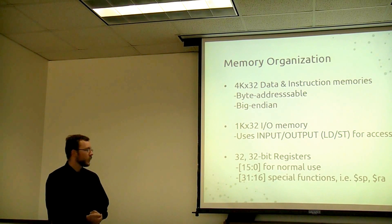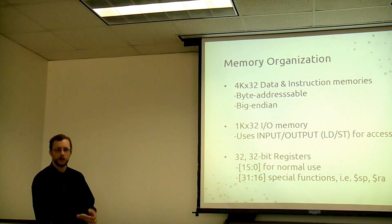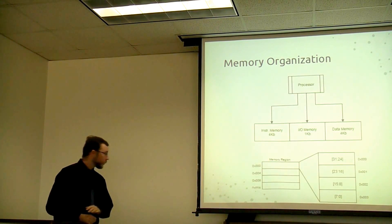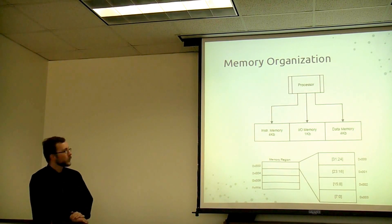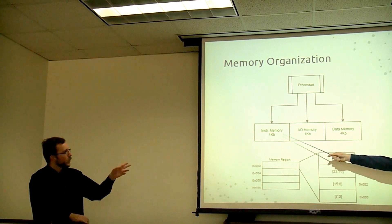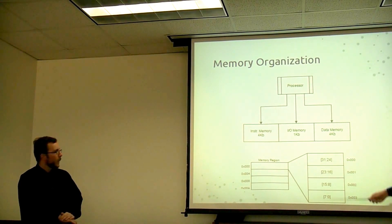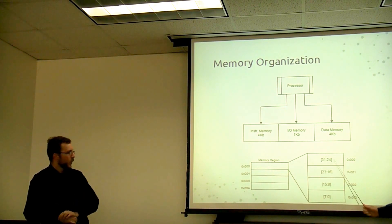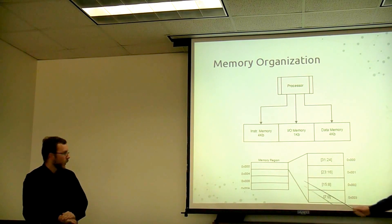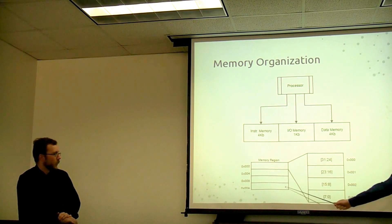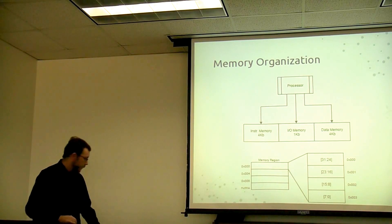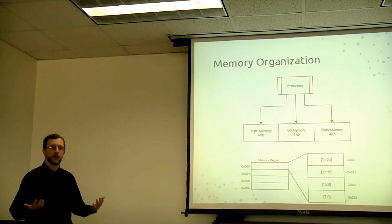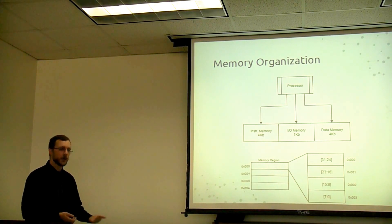The upper 16 are special registers like your stack pointer, return address, local pointer, things like that. The processor can talk to instruction memory, IO memory, and data memory. This is how big endian works — the upper byte is stored in the lower address, and the lower byte is stored in the upper address. We actually have an instruction to reverse endianness later, so if your data is not in big endian format, you can make it that way.